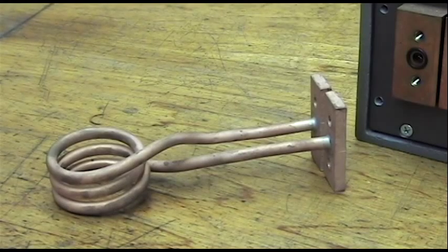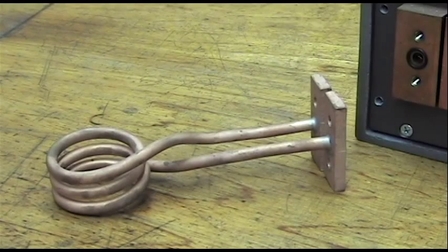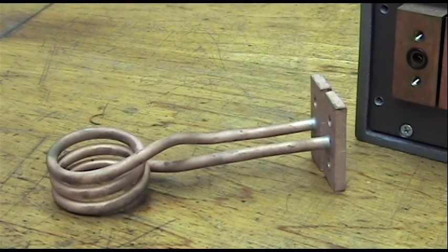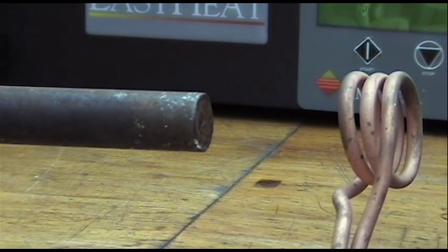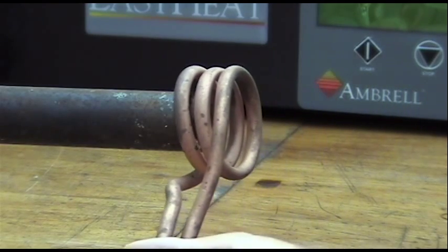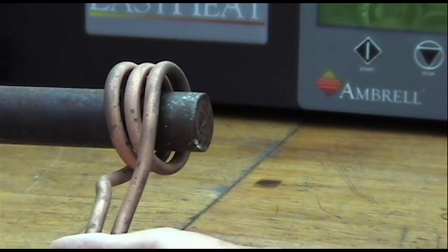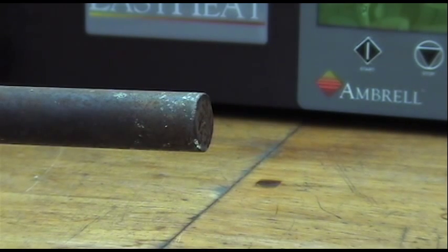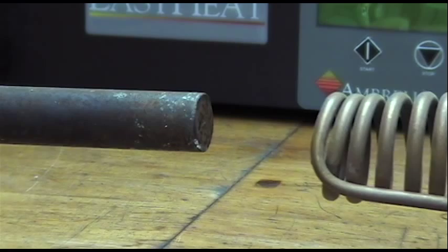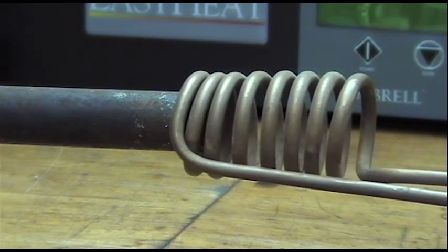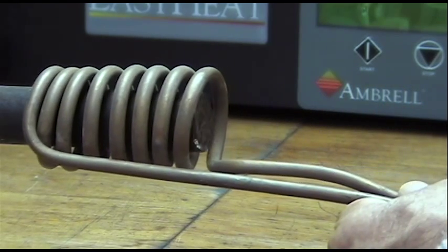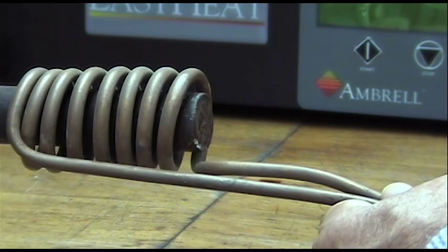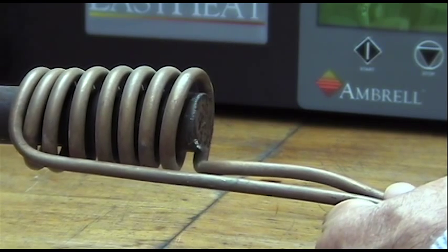The shape of the work coil can be made very specifically to fit your component or just the part of your component that you need to heat. This simple coil when placed around a component will heat the narrow band of metal that lies directly inside the coil. Placing a differently shaped coil over the component will produce a different pattern of heat consistent with the shape of that coil.